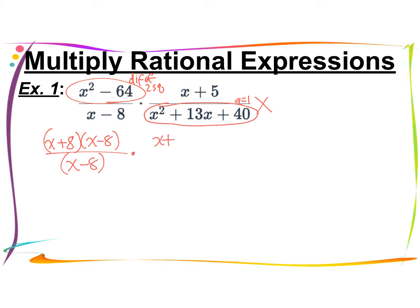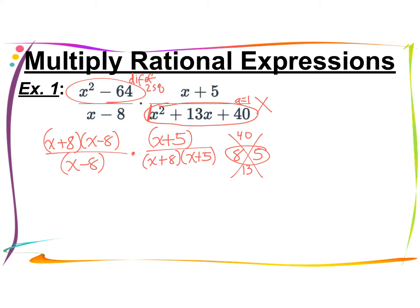In the numerator of the second fraction, we have x plus 5 — put that in parentheses. For the bottom, we factor the trinomial by thinking about what multiplies to 40 and adds to 13, which is 8 and 5. Since a equals 1, we go right to parentheses: x plus 8 and x plus 5. Now, any factor in the numerator can simplify with the same factor in the denominator to 1. So x plus 5 over x plus 5 is 1, x minus 8 over x minus 8 is 1, and x plus 8 over x plus 8 is 1. This simplifies to 1 — not 0.